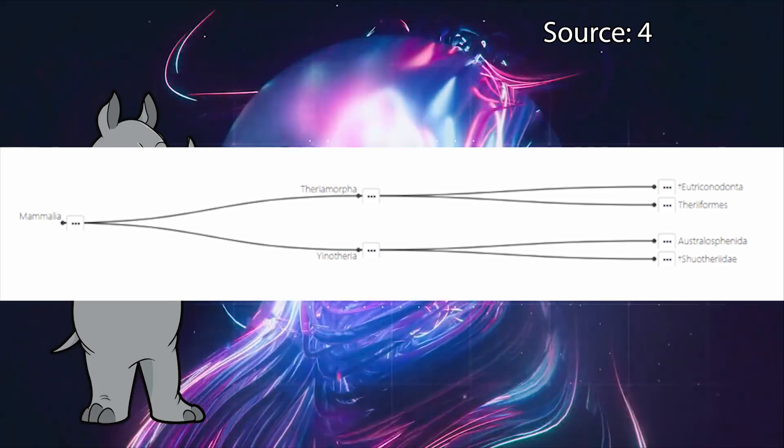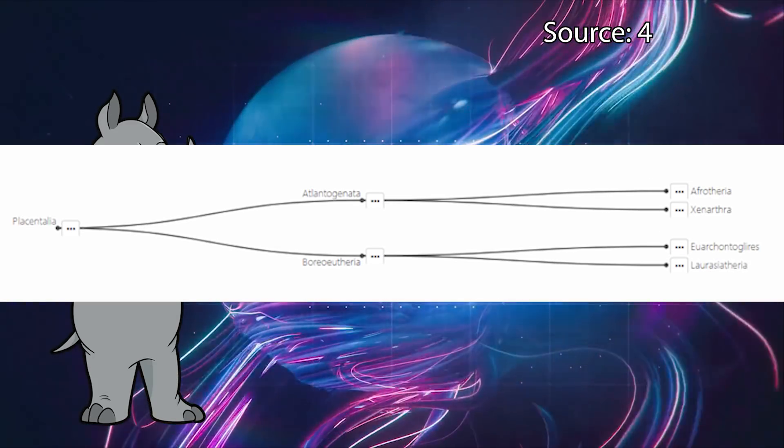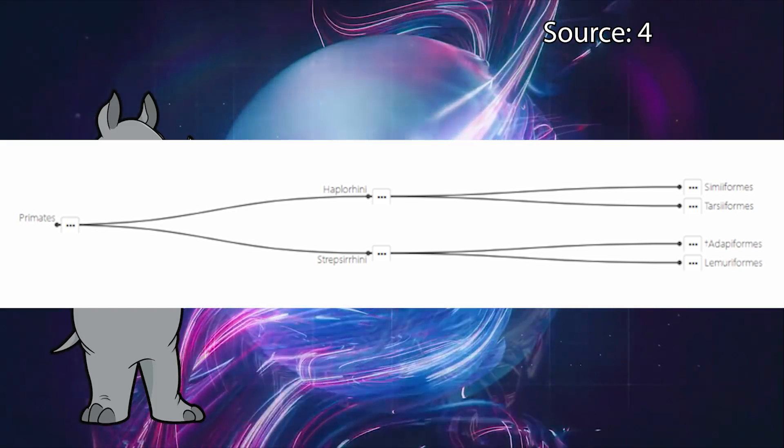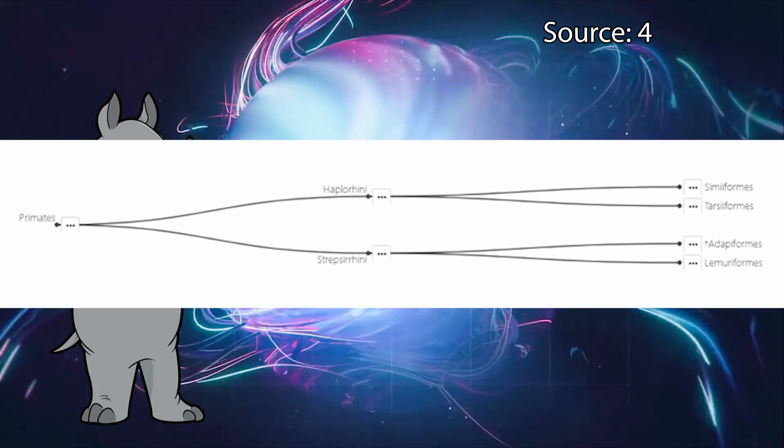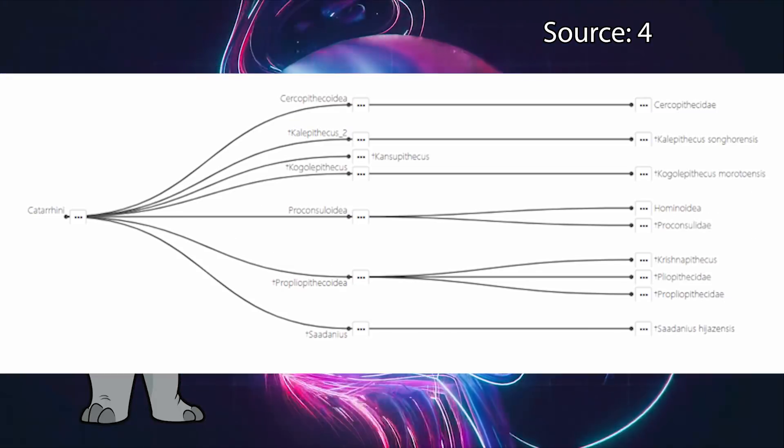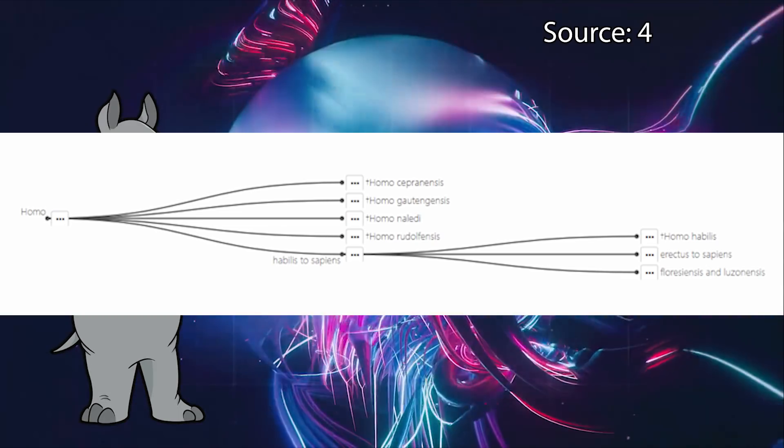We have hair and feed our babies with milk, so we are mammals. We have placentas, so we are placental mammals. Our hind legs are dominant and we have opposable thumbs, so we are primates. The exterior of our noses are dry, so we are haplorhini. Our nostrils point downward, so we are catarrhini. We are completely bipedal and use tools, so we are homo.